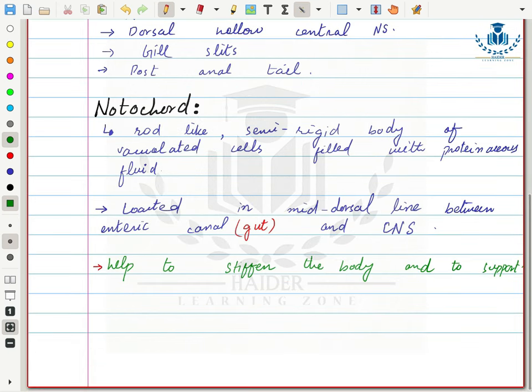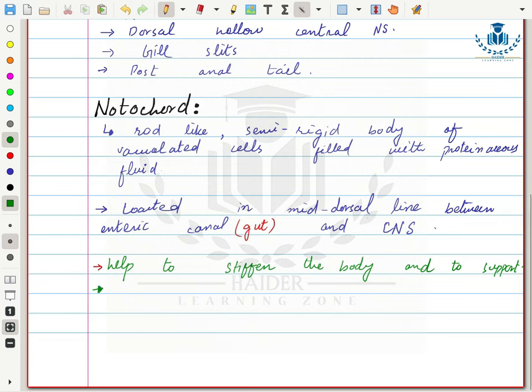Notochord helps to stiffen and support the body. It is also a component of the skeletal system in chordates. Notochord also provides space for muscle attachment — it is the site where muscles and bones attach.